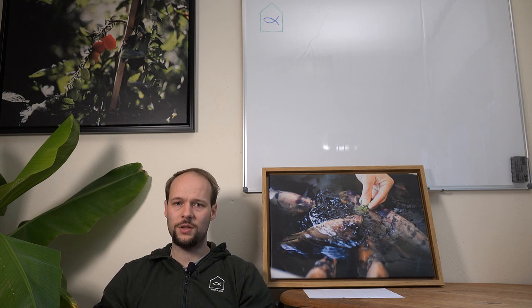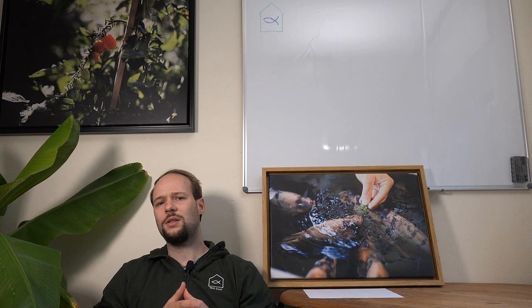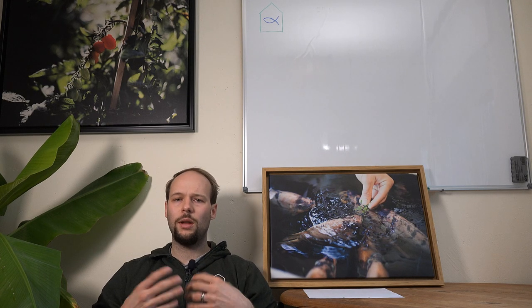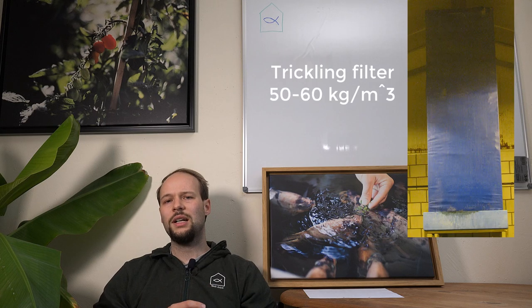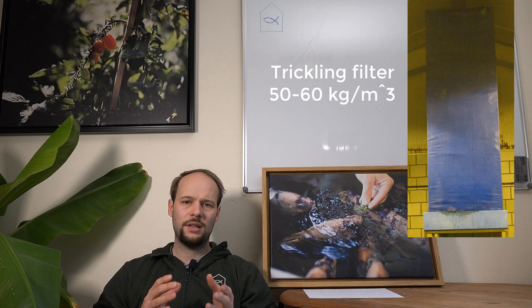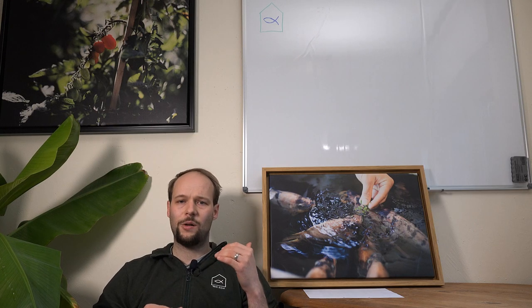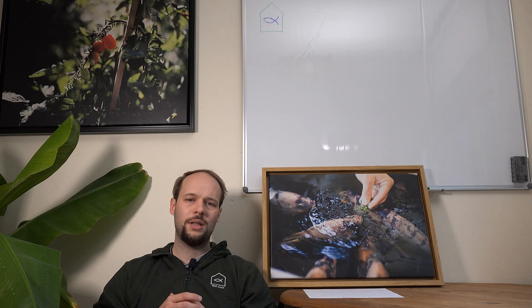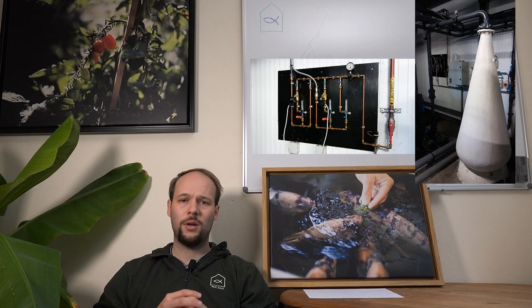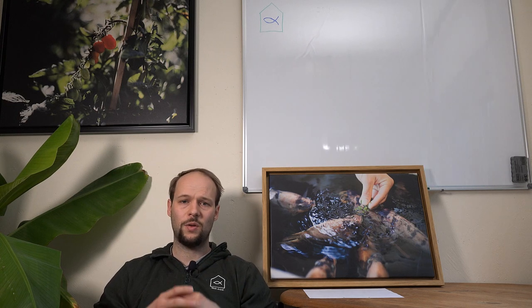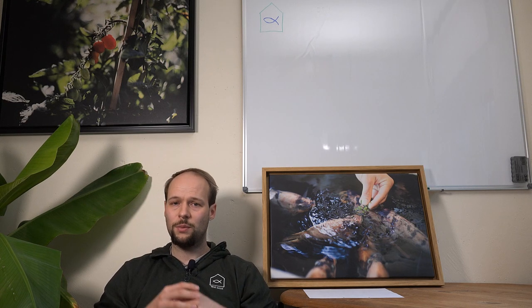So with a certain stocking density also a certain technology needs to come along. So you can support with just normal aeration or like a trickling filter stocking density is between 50 and 60 kg per cubic meter. Everything higher needs pure or technical oxygen. And to apply technical oxygen you need kind of an oxygen cone or a low head oxygenator, where you actually oversaturate the water with pure oxygen. So you have oxygen concentrations of 120-130% in your water compared to normal atmospheric pressure.